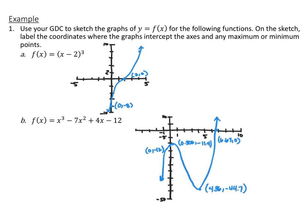For the first one, I graphed y = (x - 2)³ in my graphing calculator and found any intercepts and turning points. In this case, there were no turning points — no place where it went from increasing to decreasing or vice versa. There was a y-intercept at (0, -8) and an x-intercept at (2, 0).